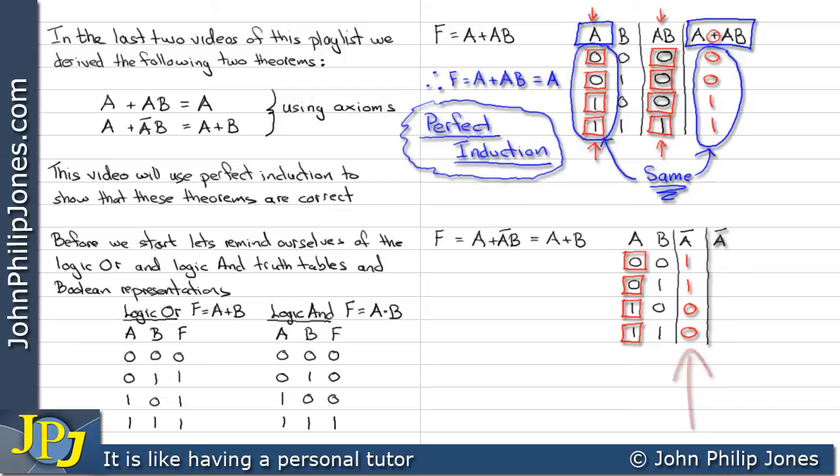Then we can look at what not A and B is, which means AND these together. Here you can see that I have a one here, and all of the others will give us a zero because you need two ones for a one.